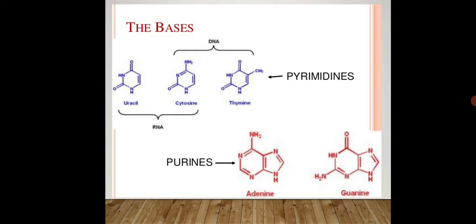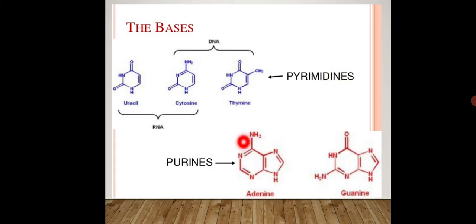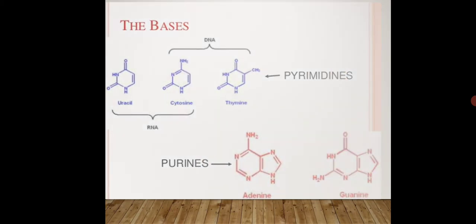There are four bases: adenine, guanine, cytosine, thymine, and uracil. These are termed purines and pyrimidines. Purines are adenine and guanine — you can remember this as 'AG.' The remaining bases — uracil, cytosine, and thymine — are the pyrimidines. This is very basic in genetics, so if you keep purines in mind the rest are automatically pyrimidines.